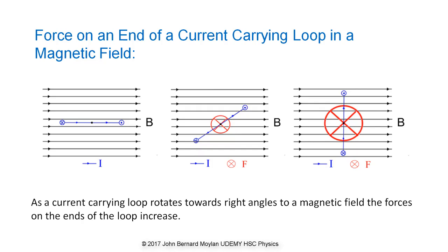This diagram shows one end of a loop with the current and magnetic field direction marked. The force on the conductor is into the page and is represented by the red circle with the cross on it. The size of the circle represents the size of the force acting on that end of the loop.